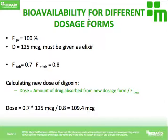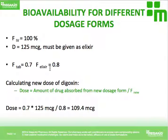Different dosage forms can have different bioavailability as well. For example, if a patient with congestive heart failure also has difficulty swallowing, you would give them digoxin as an elixir rather than a tablet. Digoxin elixir actually has a slightly better bioavailability than the tablet — 0.8 versus 0.7. Based on that, you can calculate the equivalent dose or the amount absorbed when taken as an elixir.